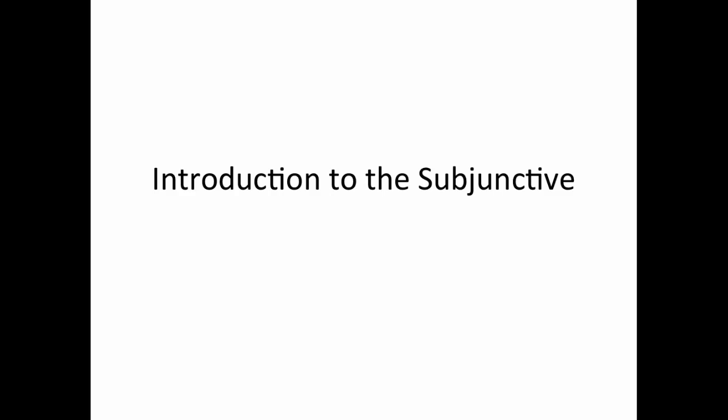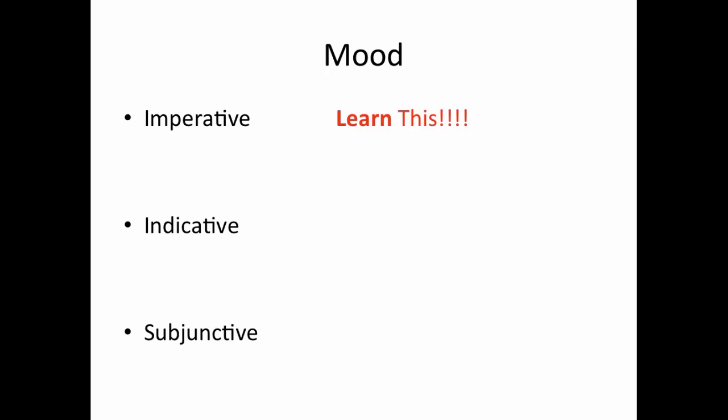This video is a brief introduction to the subjunctive mood. When we say the mood of a verb, we're just talking about the manner in which an action happens. For example, an imperative is just going to be a command — 'Learn this' — so the way in which the action is expressed is a command way.